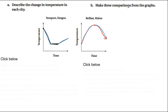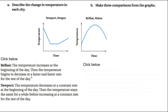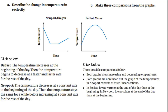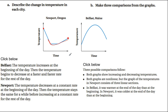Three comparisons between the two city temperature graphs: both graphs show increasing and decreasing temperatures; both graphs are non-linear. Also, in Belfast it is warmer at the end of the day than at the beginning, whereas in Newport it is colder at the end of the day than at the beginning — Newport starts higher and ends lower, Belfast starts lower and ends higher.